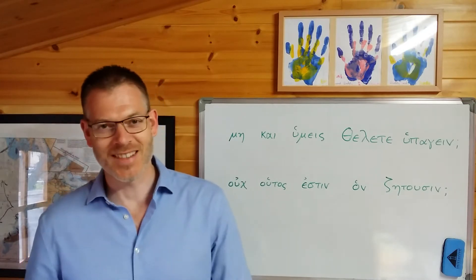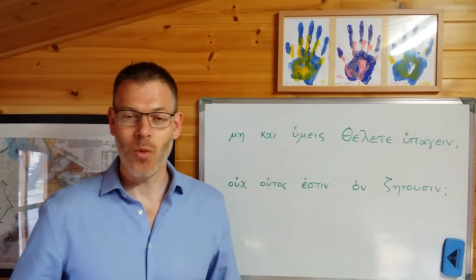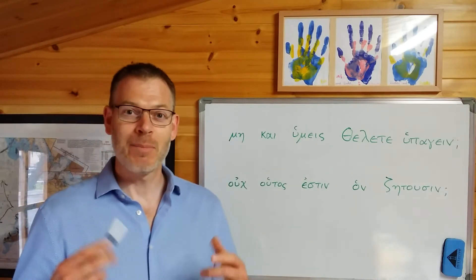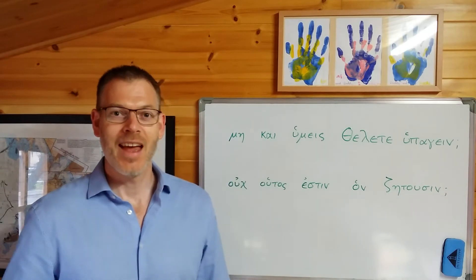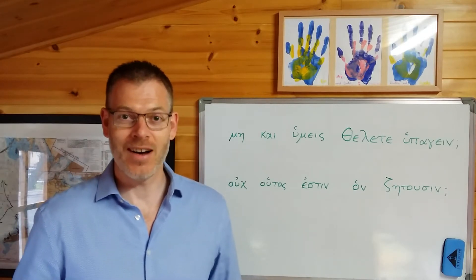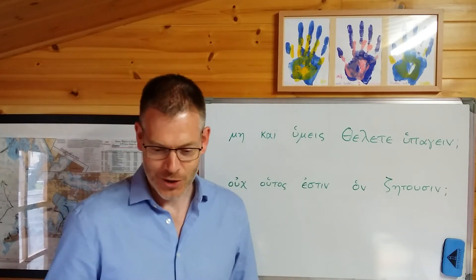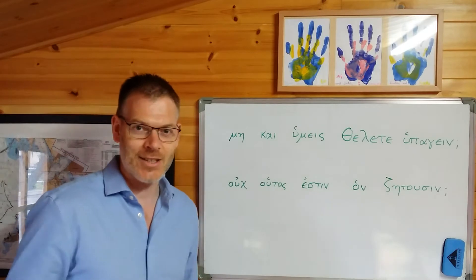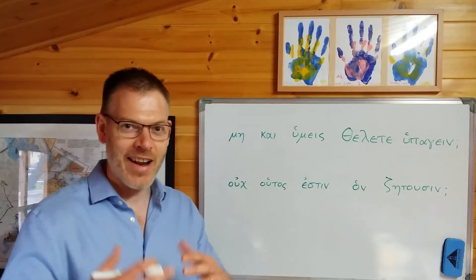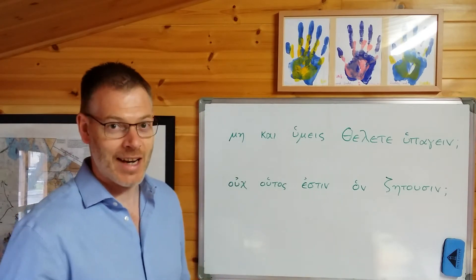Well, it turns out that in Greek it's possible to do exactly the same thing, and you do it in much the same way. You stick one of the words for 'not' into the question, and the particular word that you choose indicates whether you're expecting a positive or a negative answer. I'm going to give you a couple of extra tips that Duff doesn't mention to help you remember which of the two question words expects respectively a positive and a negative answer.